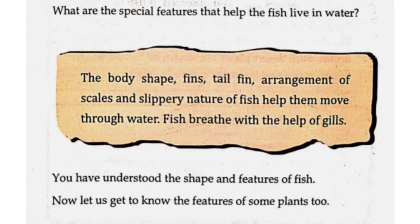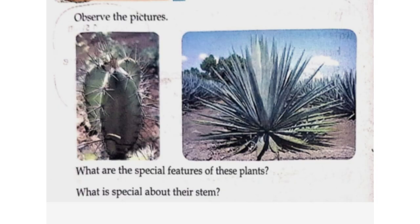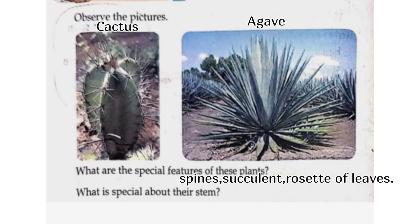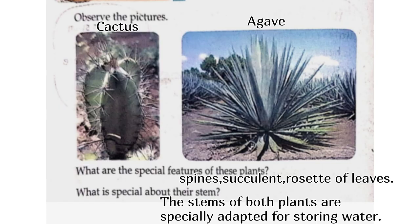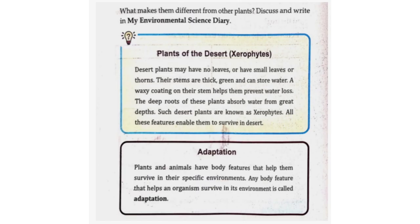You have understood the shape and features of fish. Now, let us get to know the features of some plants too. What are the special features of these plants? The first is a cactus. The second is an agave. These plants have spines. The cactus is succulent and the agave has a rosette of leaves. The stems of both plants are specially adapted for storing water.